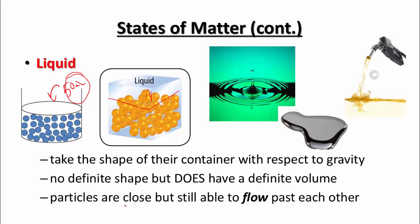What's unique about liquid particles is that they are still very close together, so you really can't compress them any closer. But what's also unique is that they can flow past one another — they have the ability to keep sliding and moving around. Here are three examples of liquids: water, liquid metal which is mercury, and gasoline.